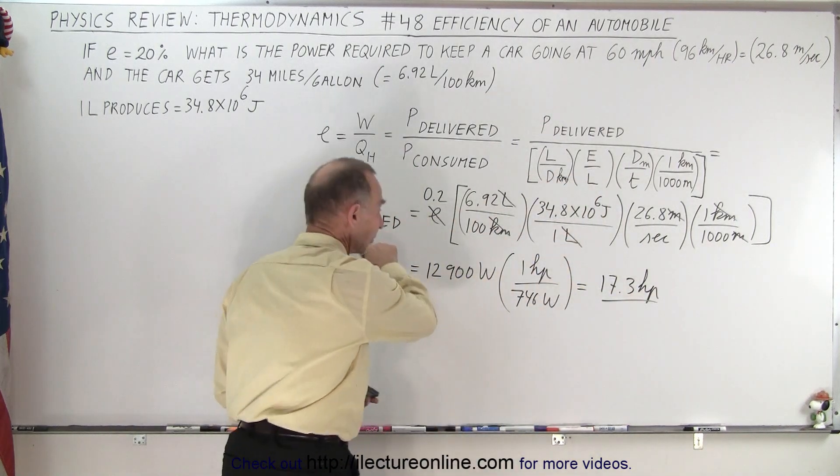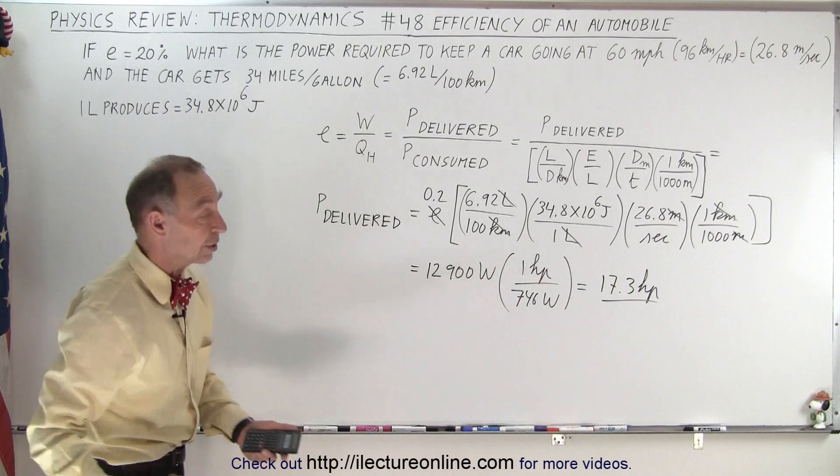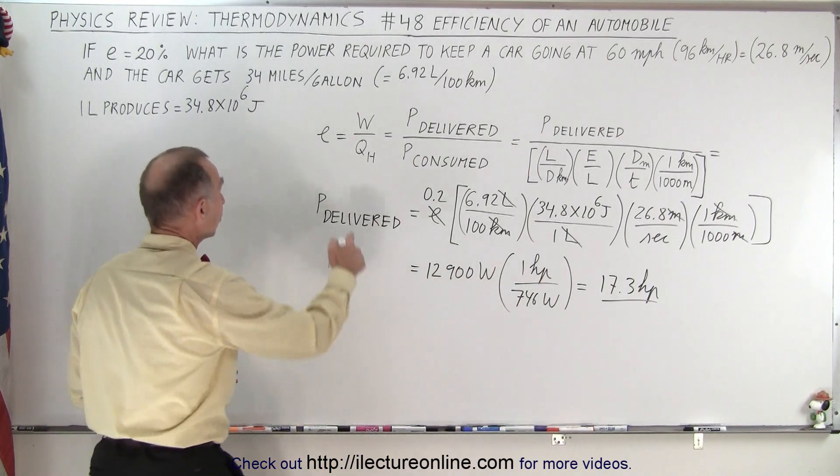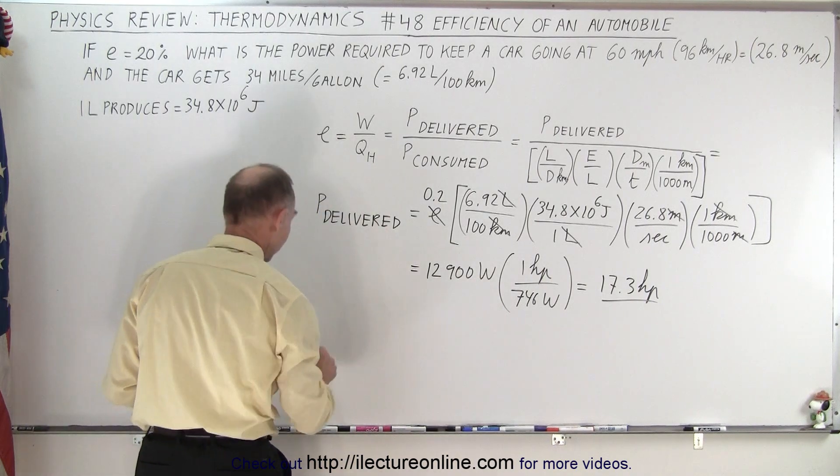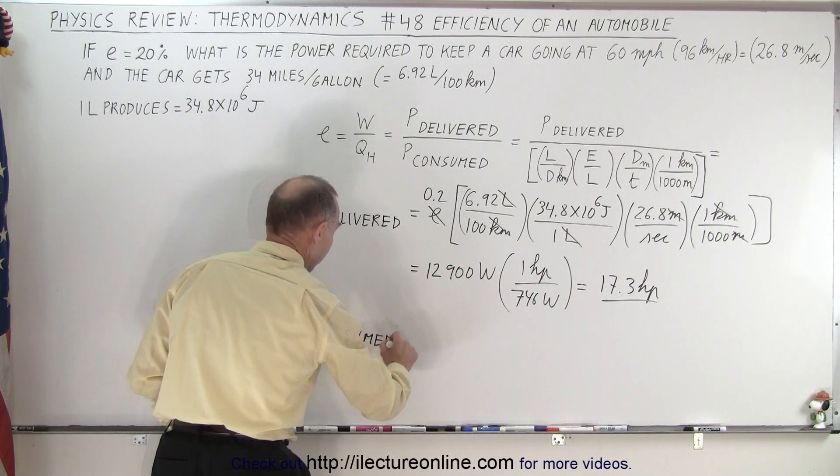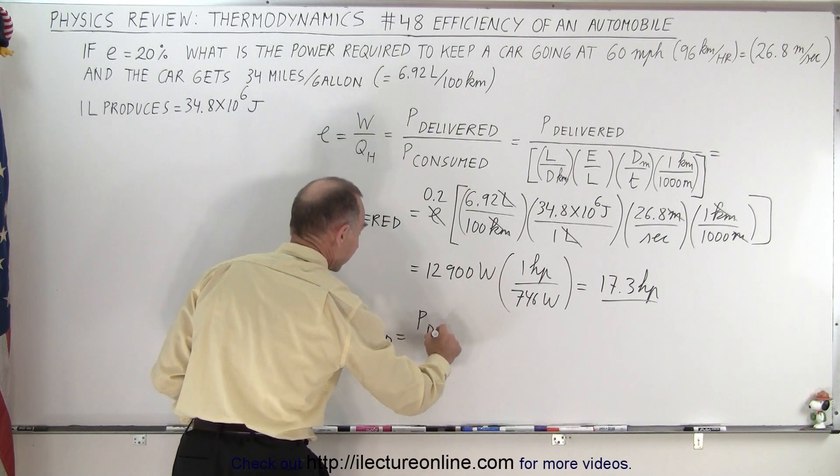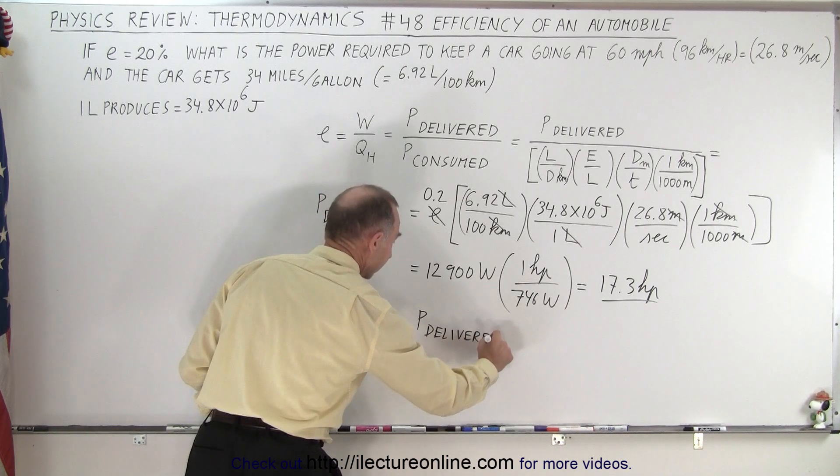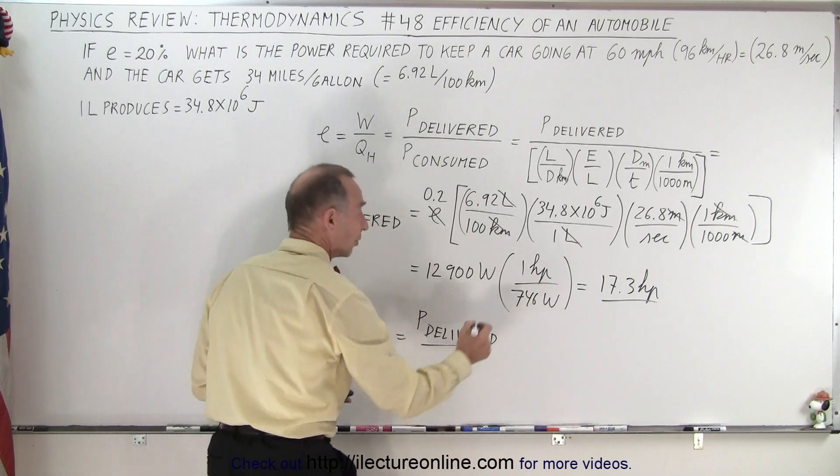But how much power do we need to consume? Well, we need to consume five times as much because the efficiency is 0.2, so power consumed equals power delivered divided by the efficiency. So in this case, that is 17.3 horsepower divided by 0.2.